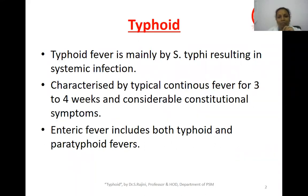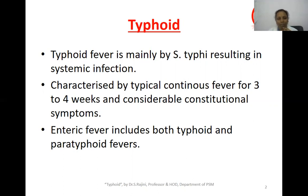Typhoid Fever is usually an endemic infection. The other name for Typhoid Fever is Enteric Fever. The agent causing Typhoid Fever is Salmonella Typhi, which results in a systemic infection characterized by typical continuous fever for 3 to 4 weeks, along with considerable constitutional symptoms like headache, vomiting, and diarrhea. Enteric Fever includes both Typhoid as well as Paratyphoid Fever.